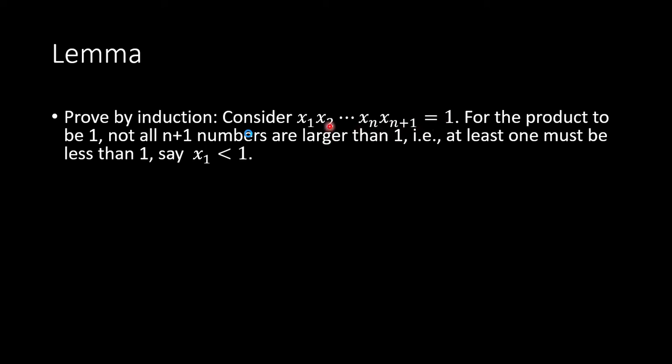If their product is equal to 1, for the product to be 1, not all the n plus 1 numbers are larger than 1. Otherwise, the product is larger than 1. At least one of them must be less than 1. Let's say x1 less than 1.